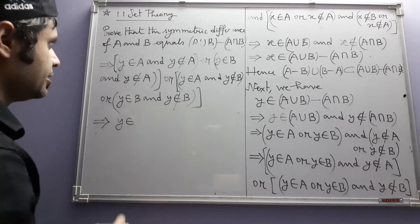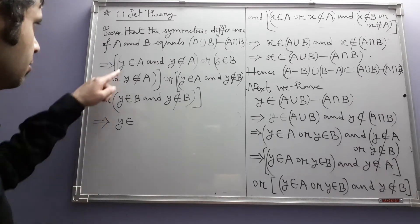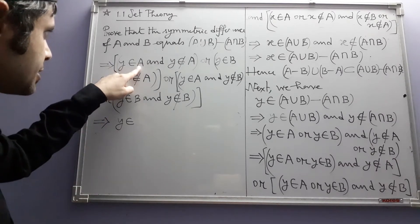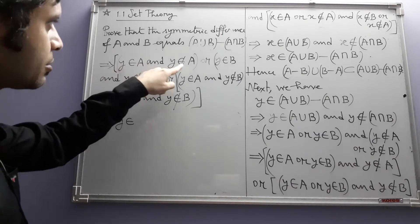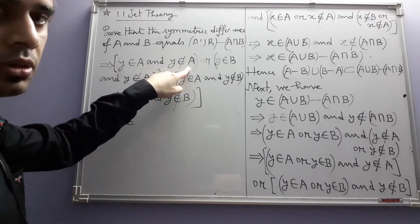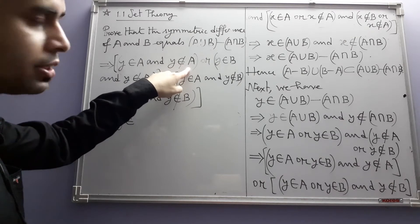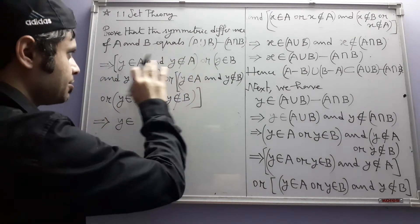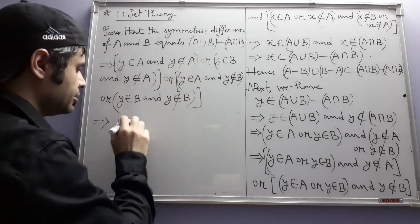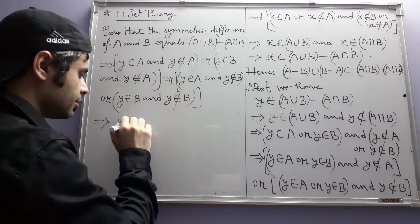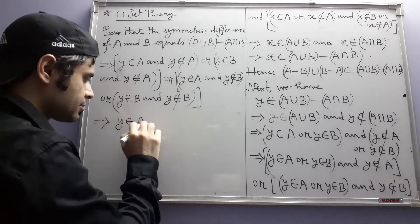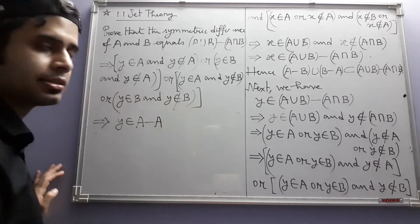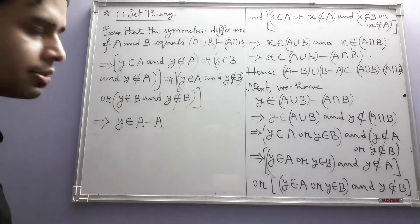Let us go by the definition. Y belonging to a set and Y not belonging to another set which happens to be the same one — that is just the definition of A minus A. That's all.